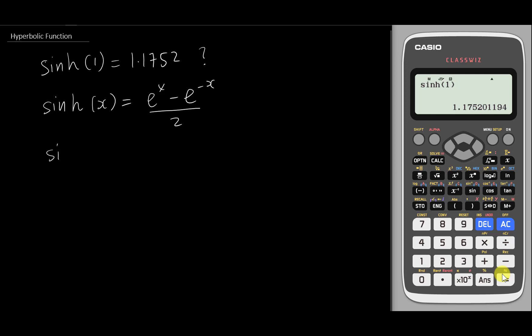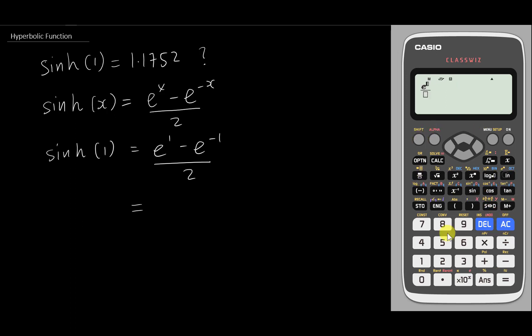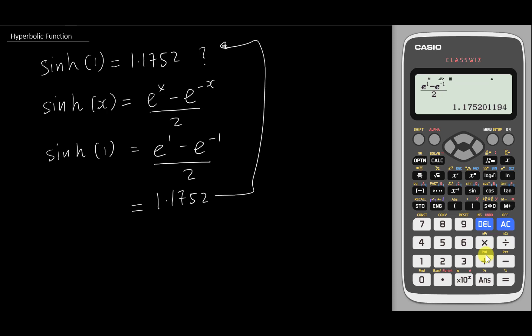The formula for hyperbolic sine x is basically: e^x minus e^(−x) divided by 2. So let's substitute 1 into x: e^1 minus e^(−1) over 2. I will type this into the calculator — fraction, then e^1, minus e^(−1), divided by 2 — and I get 1.1752, exactly the same as before. So this confirms this is the formula for hyperbolic sine.